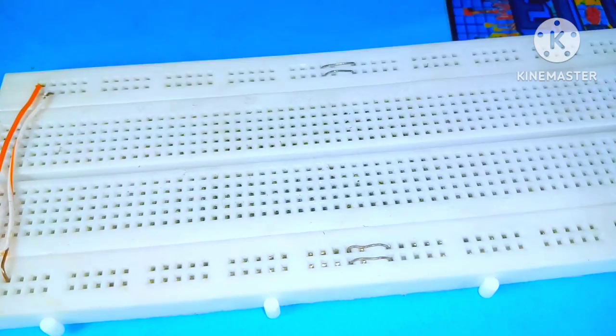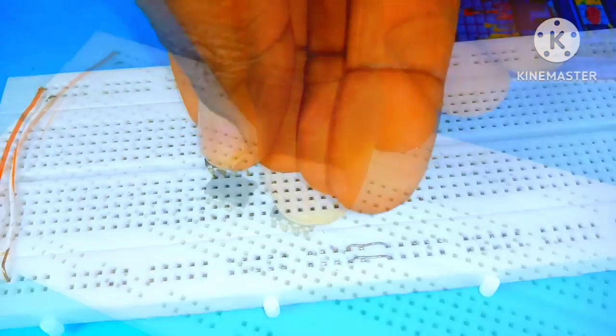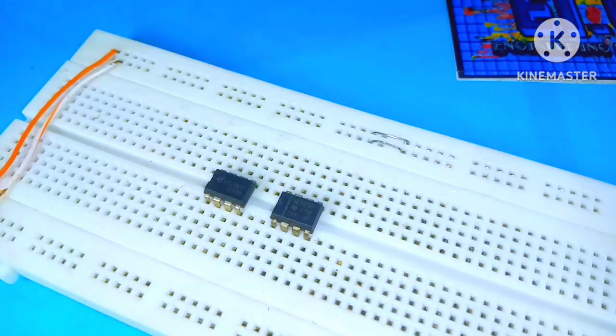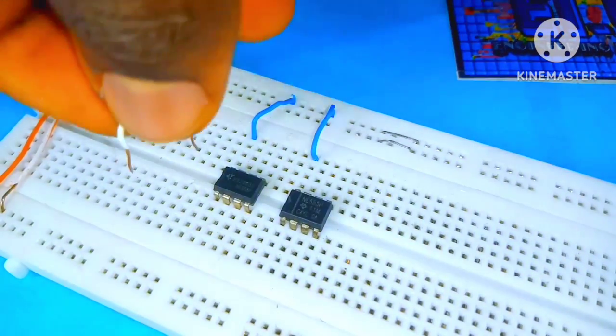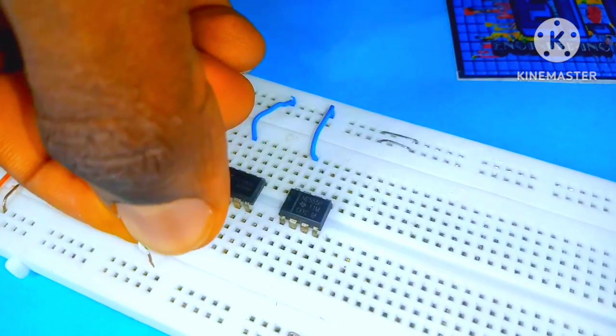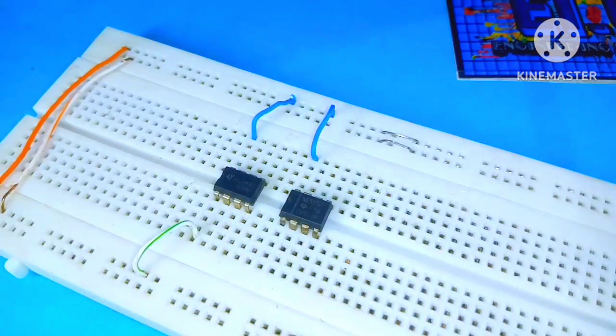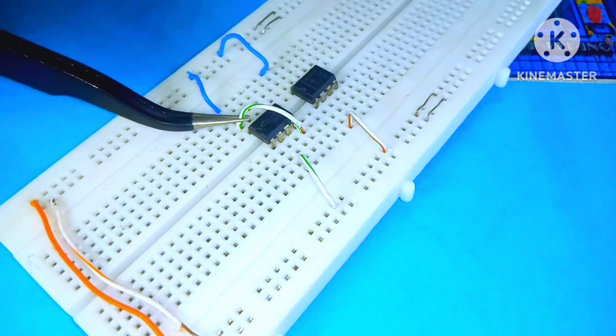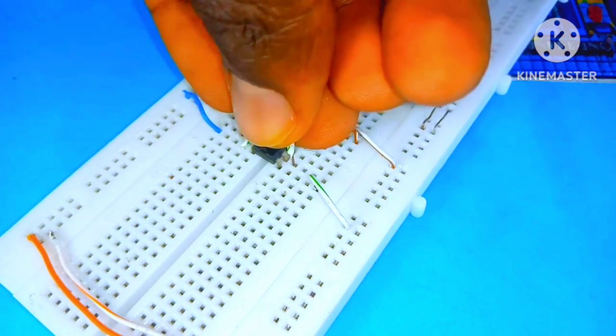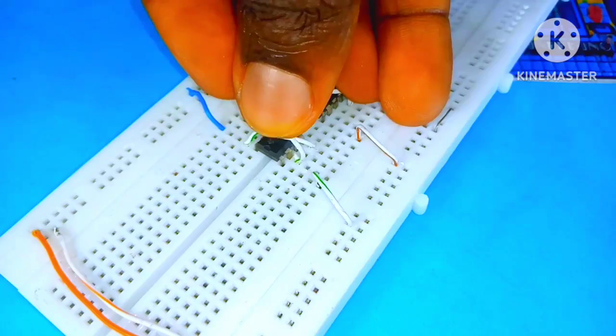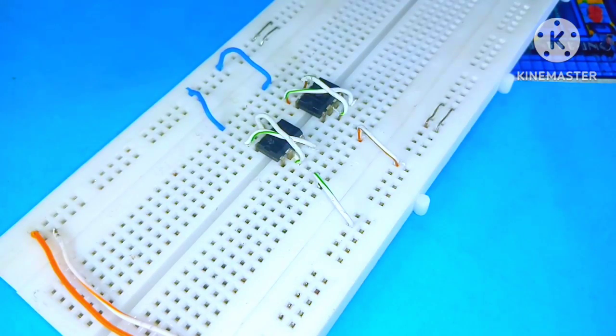So I set up two 555 timer ICs together and connected all their power pins to our power rails. That's pin 8 to the positive supply rail and pin 1 to the negative supply rail, and connected pin 4 and 8 together. Also done with the second IC and also connected pin 6 and 2 together. Every connection on both ICs are just symmetrical.